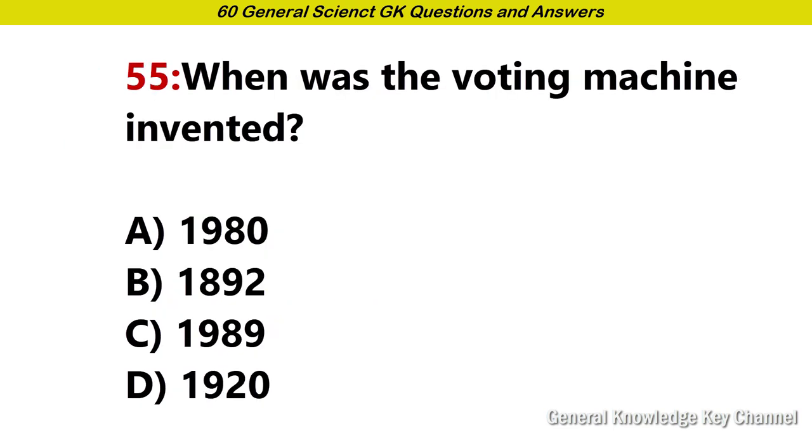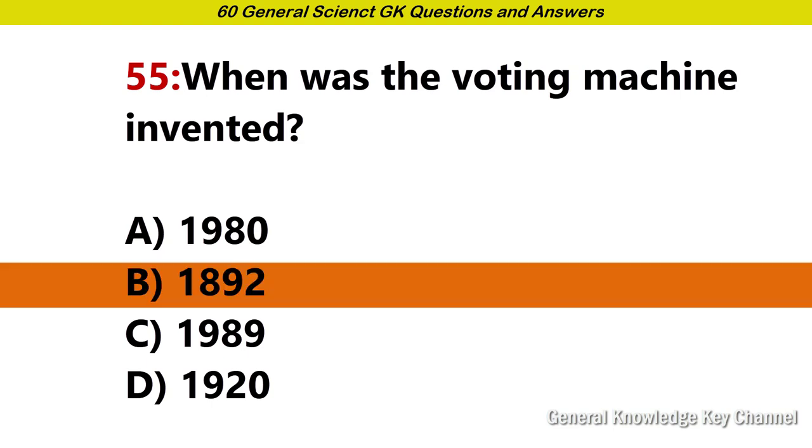When was the voting machine invented? Answer B. 1892.